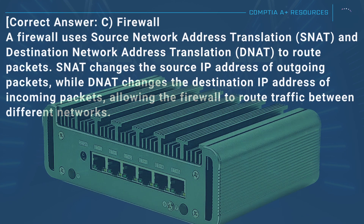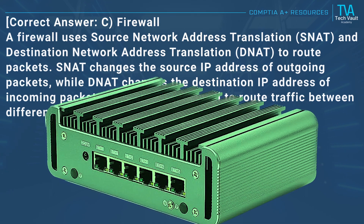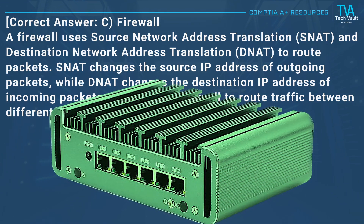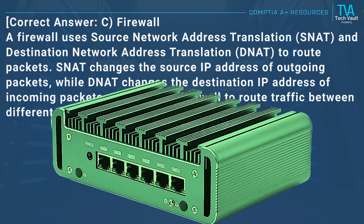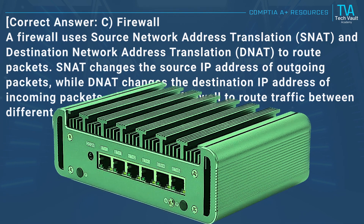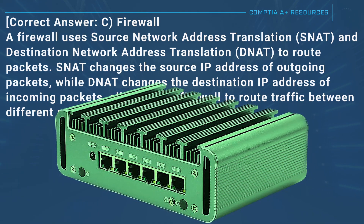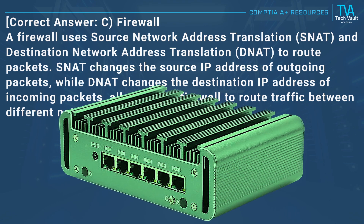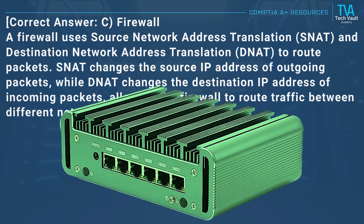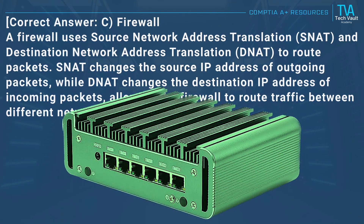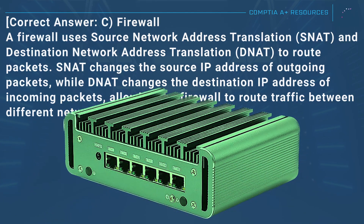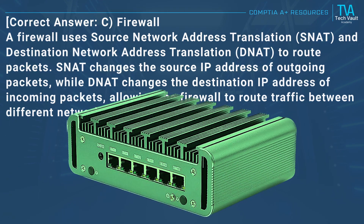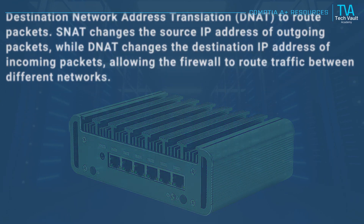Correct answer: C, firewall. A firewall uses source network address translation (SNAT) and destination network address translation (DNAT) to route packets. SNAT changes the source IP address of outgoing packets, while DNAT changes the destination IP address of incoming packets, allowing the firewall to route traffic between different networks.